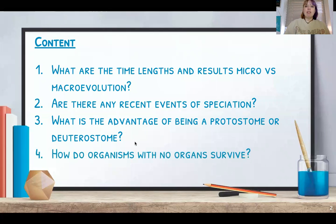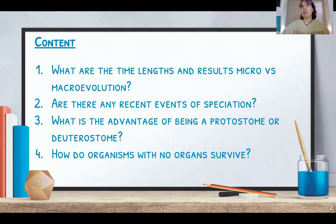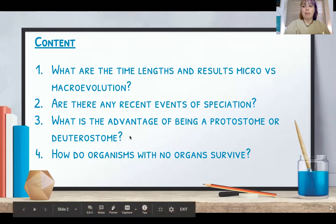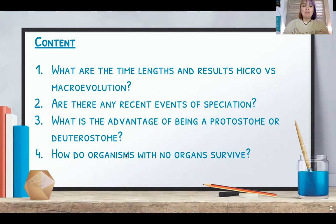How do organisms with no organs survive? They rely solely on diffusion, tissues, and other cells to perform the functions that organs would do. The first two organism groups we're going to talk about rely solely on diffusion and cell groups — they don't have organs.